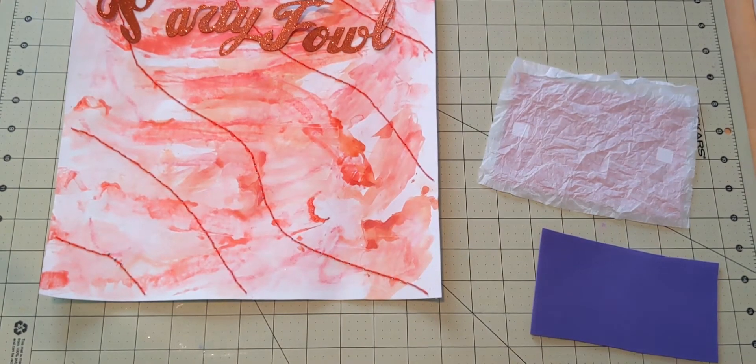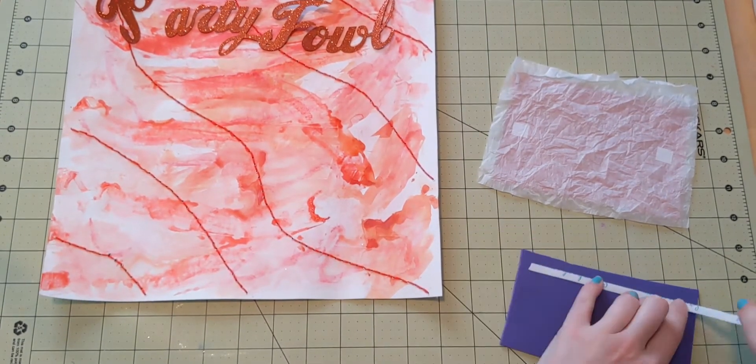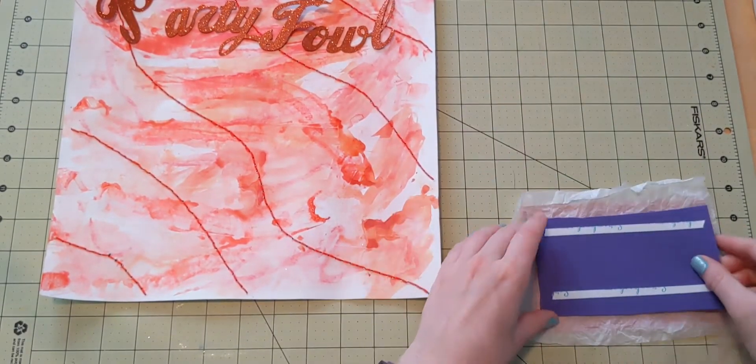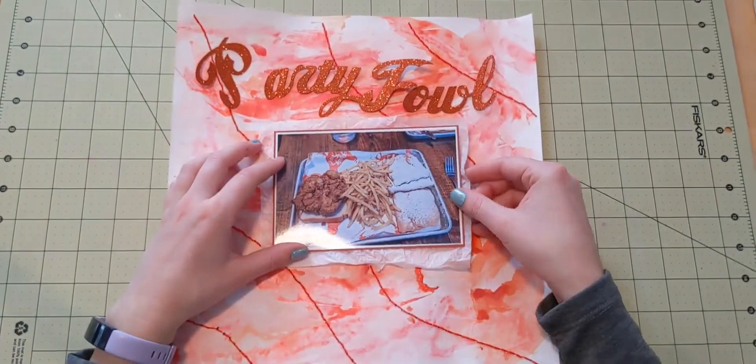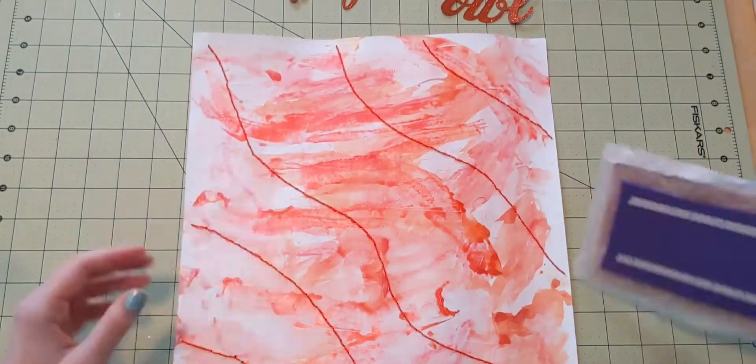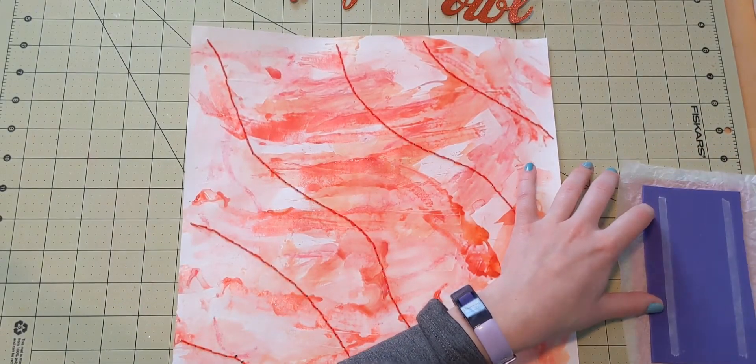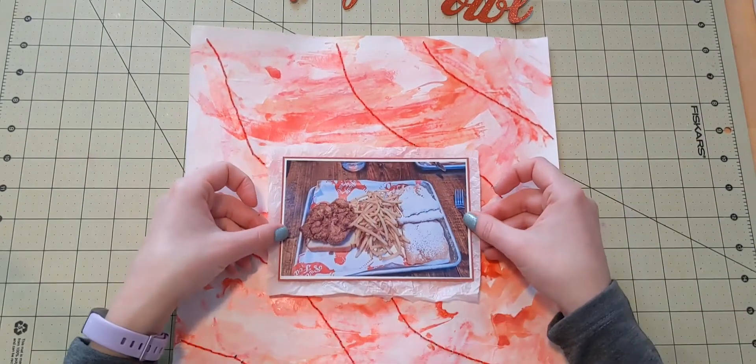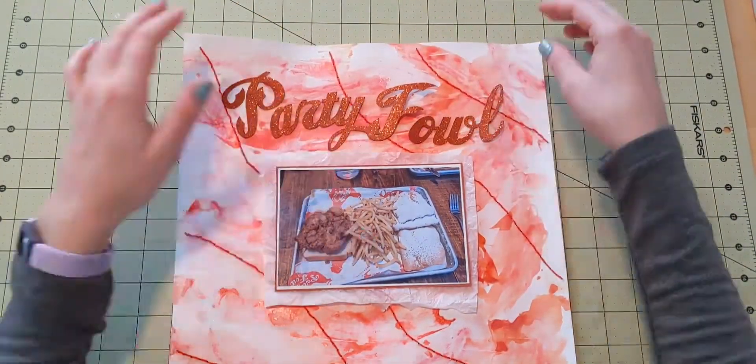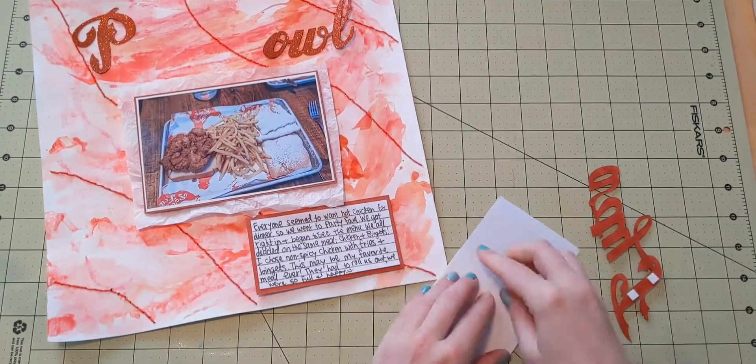And in order to adhere anything to the actual mixed media background, I am using double-sided tape. Right now I have some scrapbook.com double-sided tape, which is very nice. It comes on a much larger roll than my regular Dollar Tree double-sided tape, which is really nice because I'm not running out of it as fast. So I'm putting this photo basically right in the middle. I've got my title there up at the top, and then I'm not exactly sure where the journaling box is going to go.